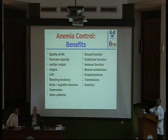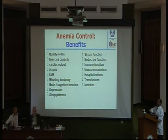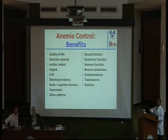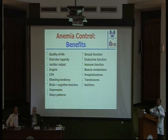This is why correction of anemia is associated with improvement of bleeding tendency. In the past, uremic bleeding was very famous, and one of the important lines of treating uremic bleeding is to control anemia. Anemia control is associated with improvement of brain and cognitive functions, improvement of depression, sleep disturbance, sexual dysfunction, endocrine dysfunction, immunological dysfunction, muscle metabolism and performance. It also reduces hospitalization, decreases the need for blood transfusion, and improves nutritional status.